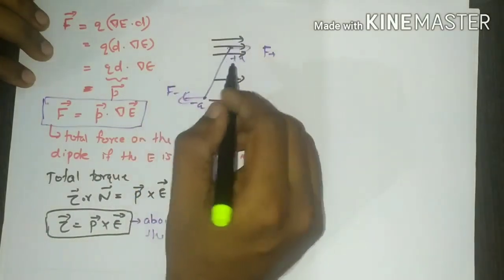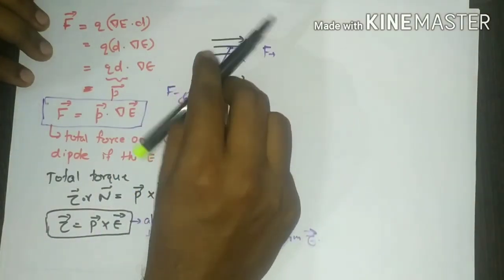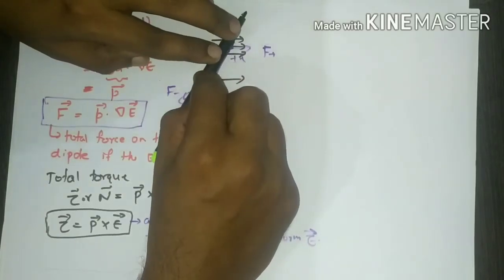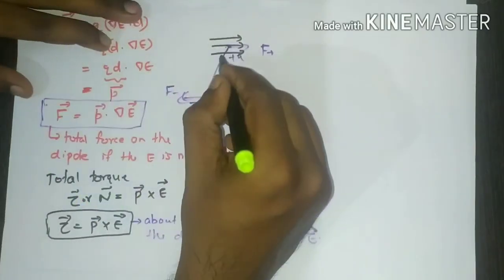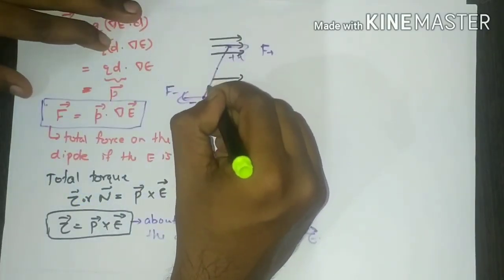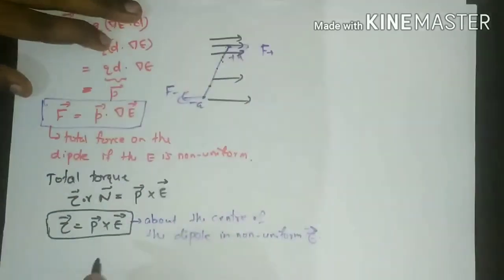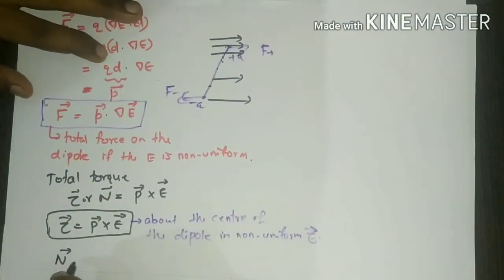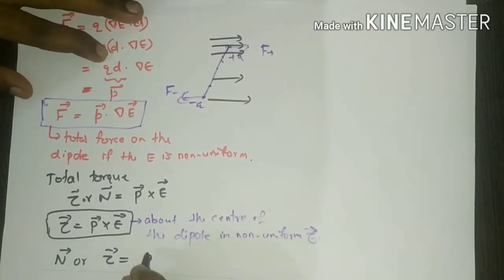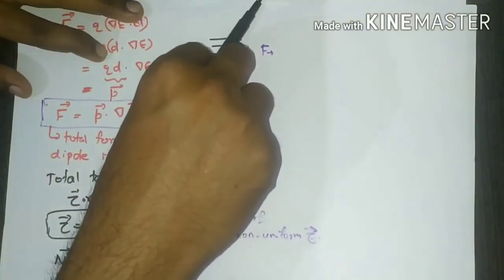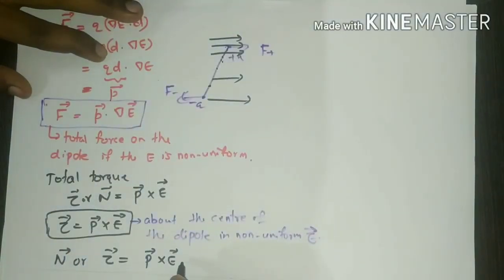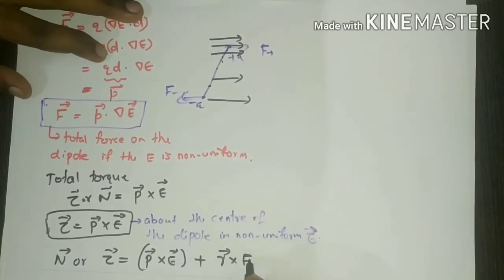If we want to calculate the torque at any other point on the dipole — not just at the center — in the non-uniform electric field, the total torque will include an additional term. The torque at any arbitrary point equals P × E plus the normal torque term r × F, where r × F accounts for the contribution due to the net force acting at that point.